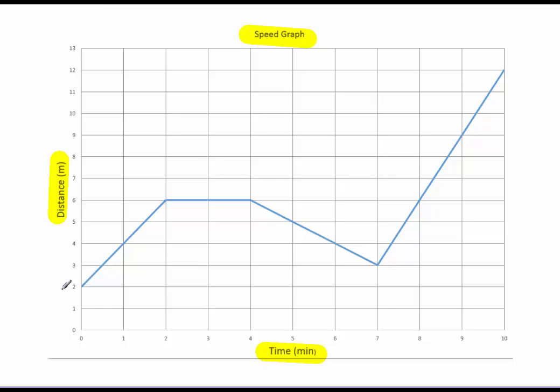So let's just take a quick look here. If we notice that at time zero, we are at distance or position of two meters. And at time of two minutes, we are at six. Remember that the formula for speed is equal to distance, change in distance over change in time.